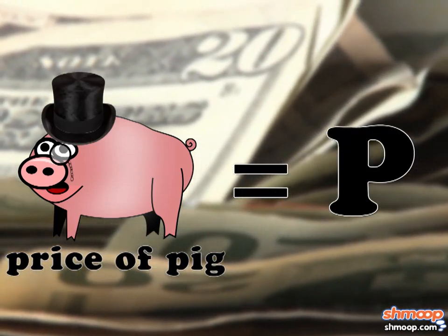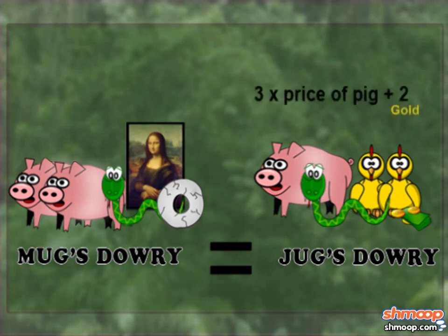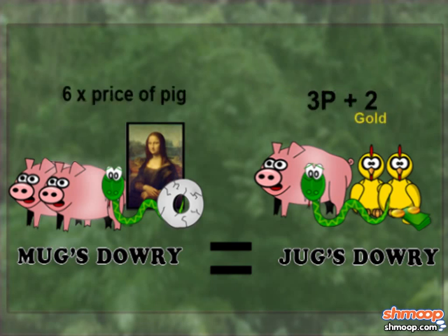We know that both women's dowries are worth the same amount. Jug's dowry is worth three times the price of a pig in gold, plus two gold — this translates into three P plus two. Mug's dowry is worth six times the price of a pig, written as six P.